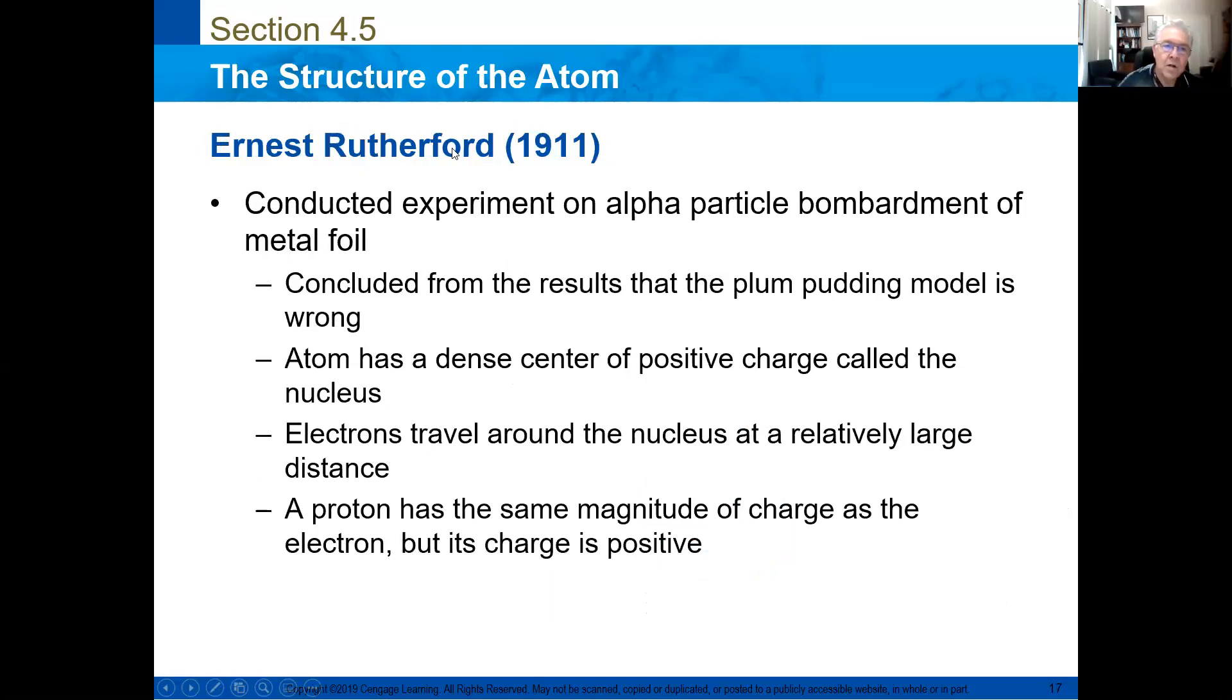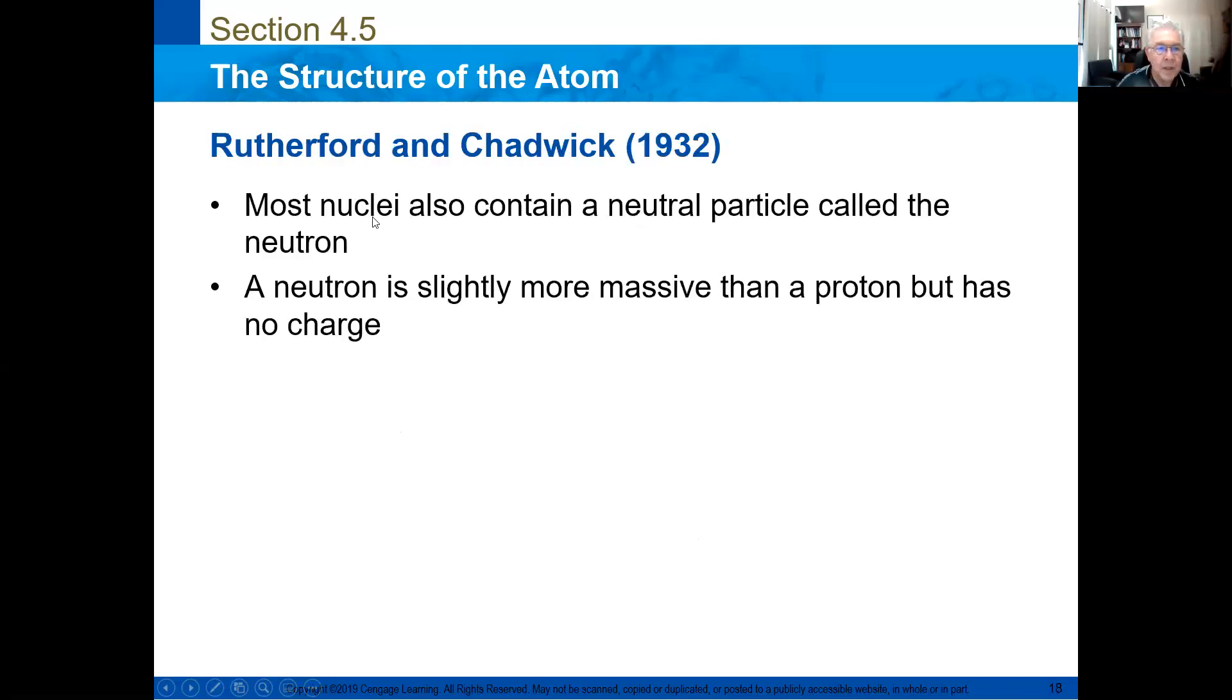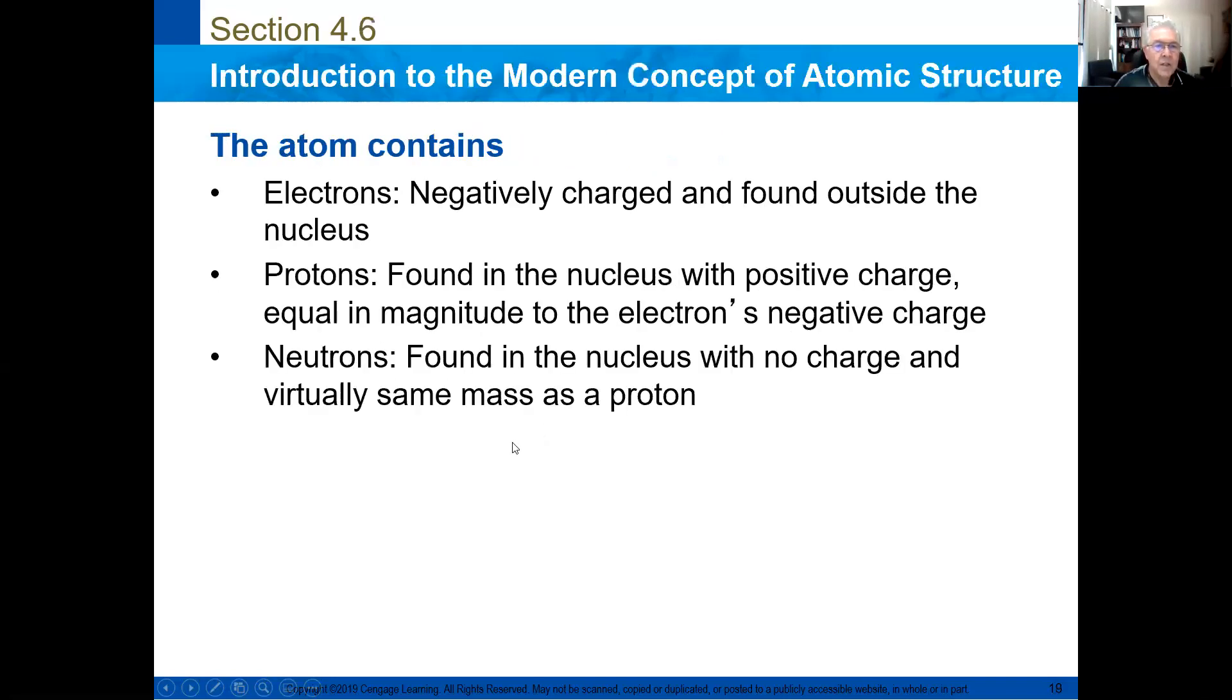Ernest Rutherford conducted an experiment of alpha particles bombardment on a metal foil. And he concluded that the plum pudding model was wrong. That the atom has a dense center of positive charge that he called nucleus. And the electrons travel around the nucleus at a relatively large distance. A proton has the same magnitude of charge as electron. But its charge is positive. Most nuclei also contain a neutral particle called the neutron. A neutron is slightly more massive than a proton, but has no charge.